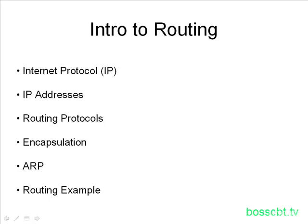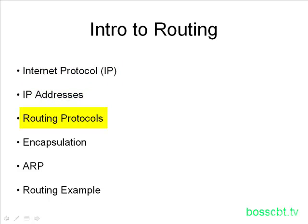We'll take some time to look at Internet Protocol, IP, and that leads us nicely into IP addressing. We'll take a brief look at routing protocols, what they are and what they do. We'll then take a look at encapsulation and see how that actually relates back to some of the information we covered in the switching, the Layer 2 arena. Finally, we'll take a look at what is known as ARP, the Address Resolution Protocol, and how it fits into routing. And we'll do all this in the context of a large routing example. So let's go ahead and get started.